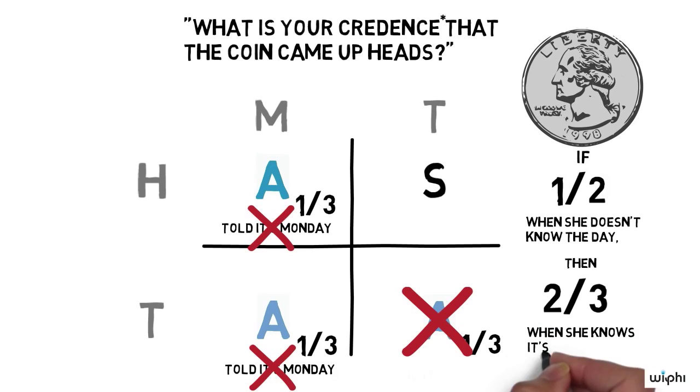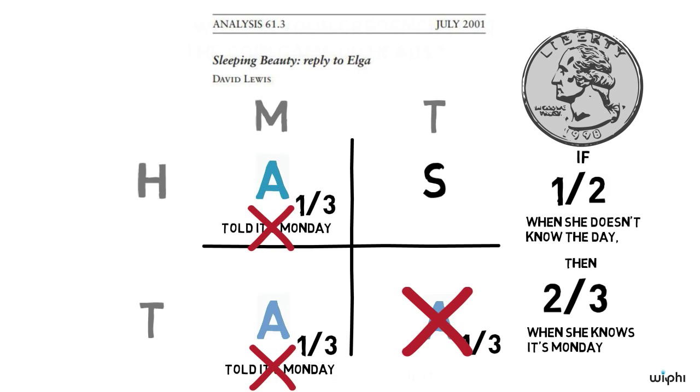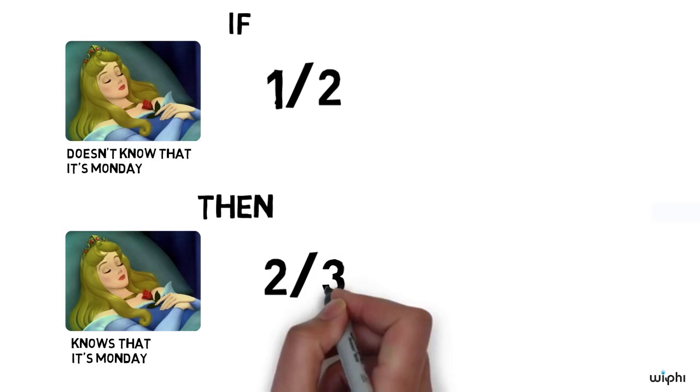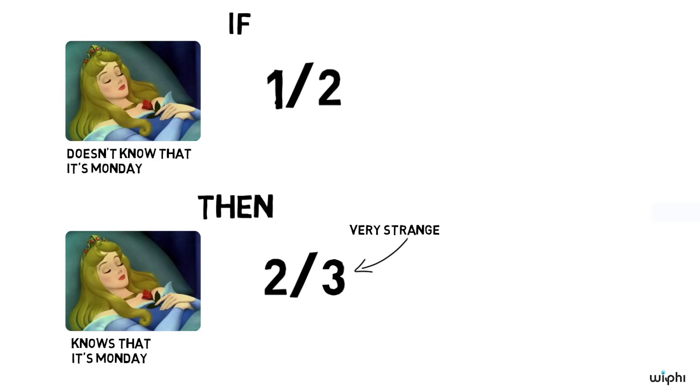You'll have to take my word for this now, but check out this article by David Lewis if you want to be sure. So we can say that the answer is one half, but then we have to accept that sleeping beauty ought to say that the probability that the coin comes up heads is two thirds when she's told it's Monday. That seems really strange, so why not go with the one third view?